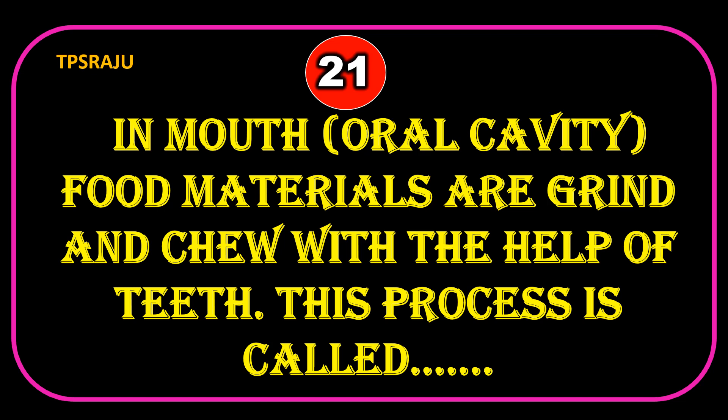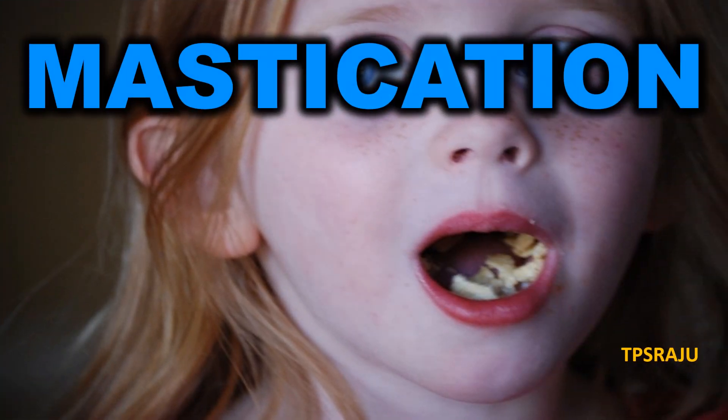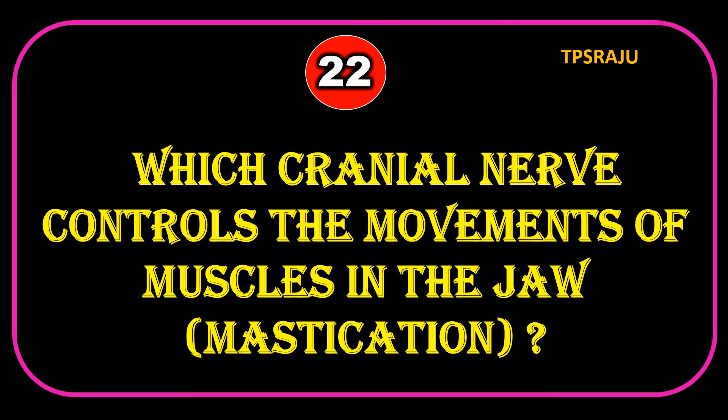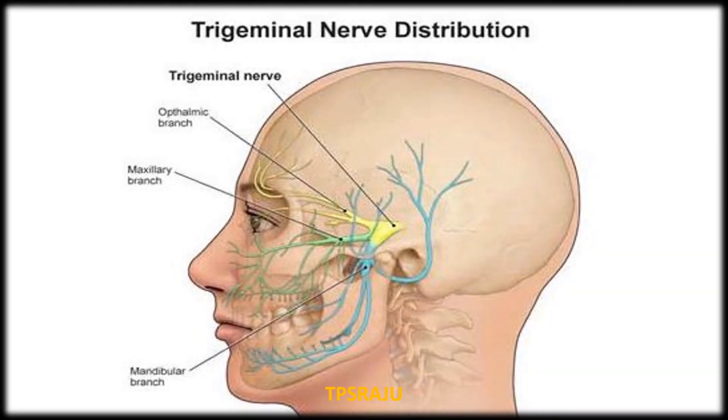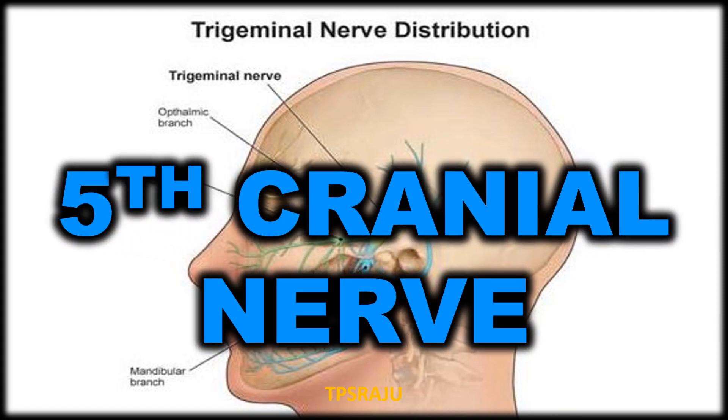In the mouth, food materials are ground and chewed with the help of teeth. This process is called mastication. The fifth cranial nerve controls the movements of muscles in the jaw.